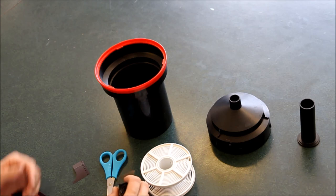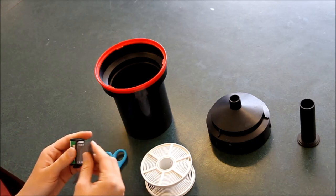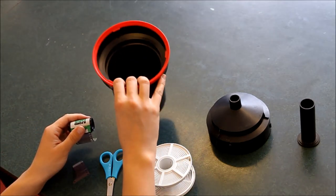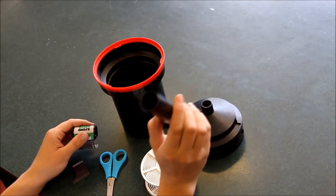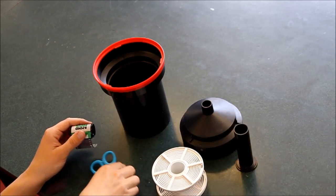Okay so the things you need for this task is your film which you have had the end picked out of. I'm using the film picker. You need to have a tank, a funnel, a spindle, and a spiral, and a pair of scissors.